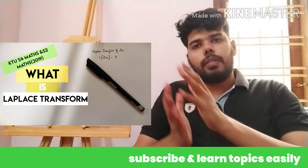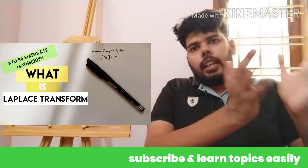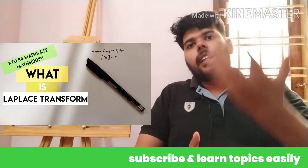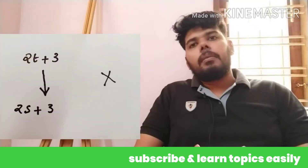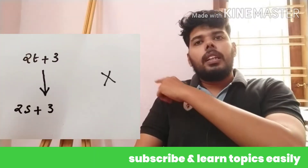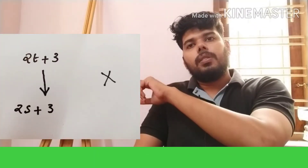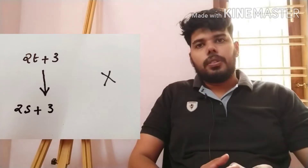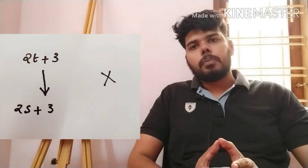We have a function of s in terms. We have f of t equal to 2t plus 3, and correspondingly f of s equal to 2s plus 3. That is completely written down.